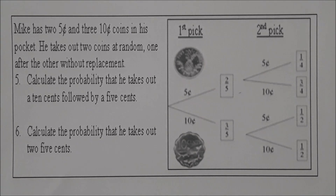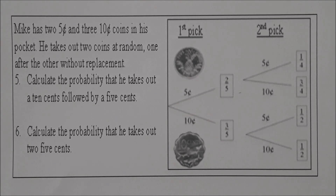Question 5. Mike has two 5-cent and three 10-cent coins in his pocket. He takes out two coins at random, one after the other without replacement. Calculate the probability that he takes out a 10-cent followed by a 5-cent. Question 6. Calculate the probability that he takes out two 5-cent coins.